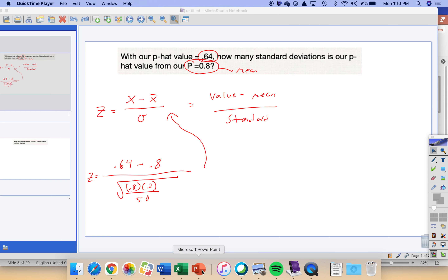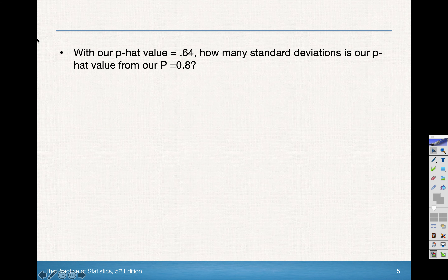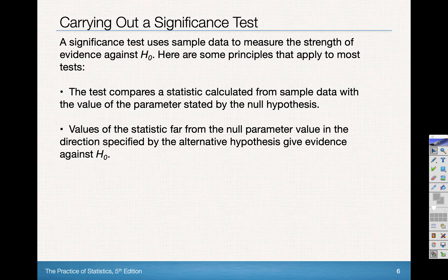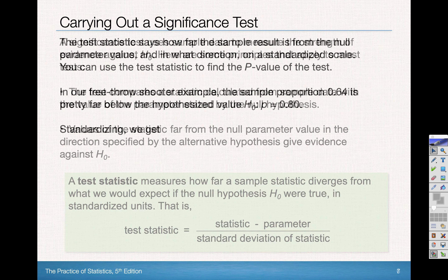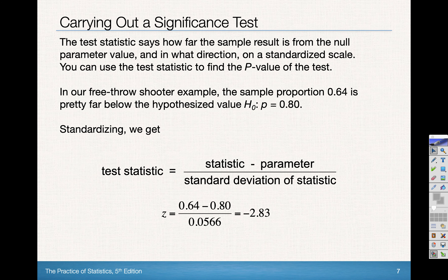How far is our p-hat from 0.8? This is called a test statistic. We know it as a z-score, but our test statistic tells you how many standard deviations away we are from the mean. It's not always going to be a z-score — in our next distribution it'll be a t-score. It standardizes our p-hat: it's the statistic minus the parameter over the standard deviation of the sampling distribution. In our particular example, we get a test statistic of negative 2.83, which is negative because it's below the parameter 0.8.